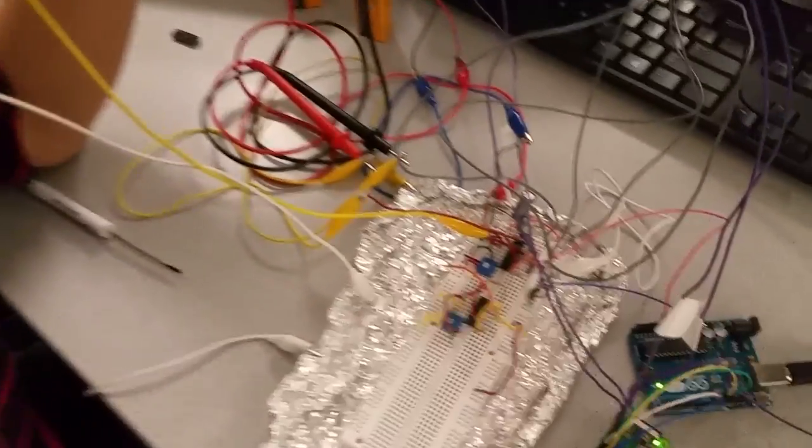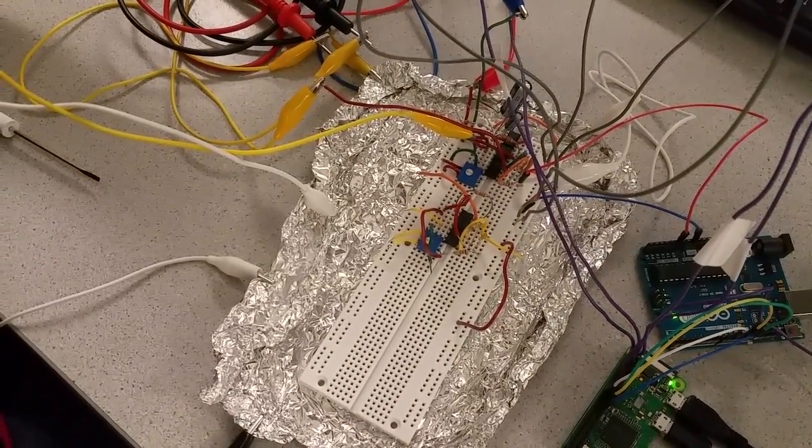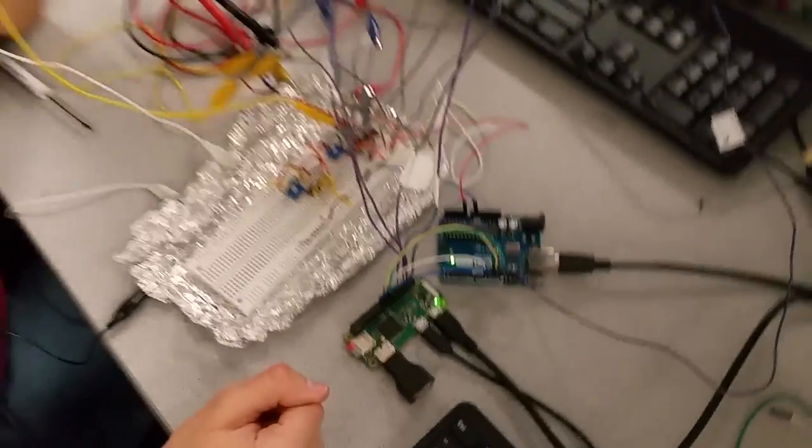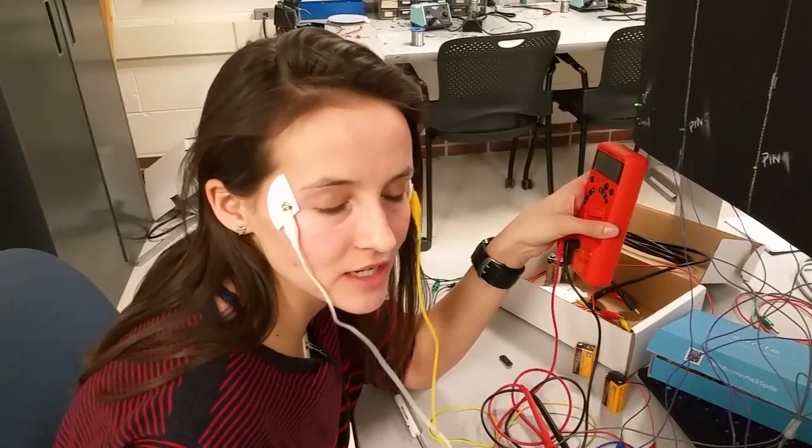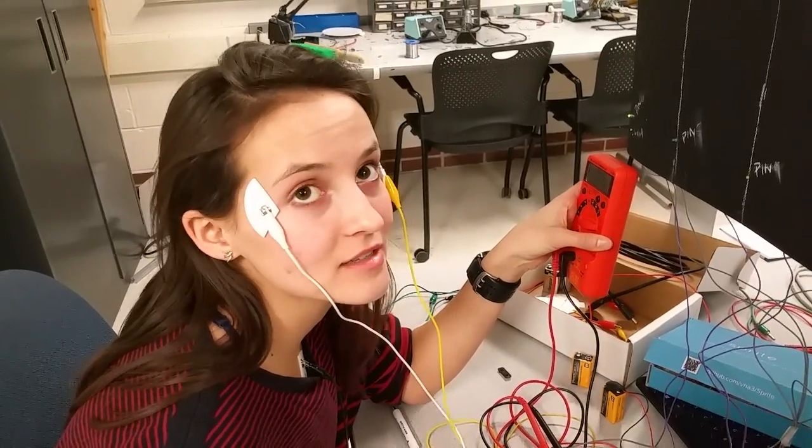And then there's a DC amplifier down here that you built, with some charming aluminum foil shielding. And then it's going off to a Raspberry Pi and an Arduino, which is doing the data analysis. Yeah, the Arduino is just basically an ADC. The Arduino is the ADC, and the Raspberry Pi is lighting the LEDs? Yeah.